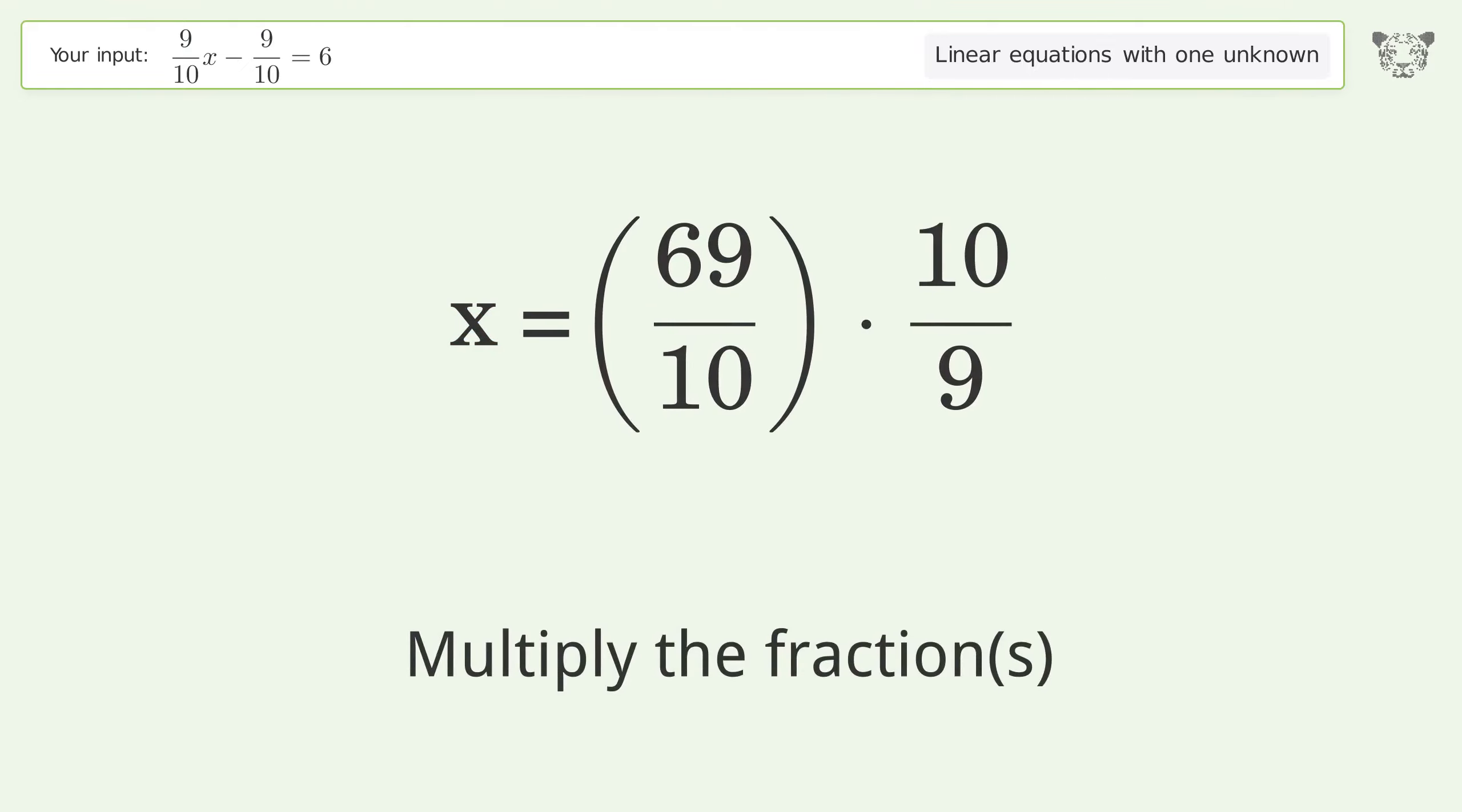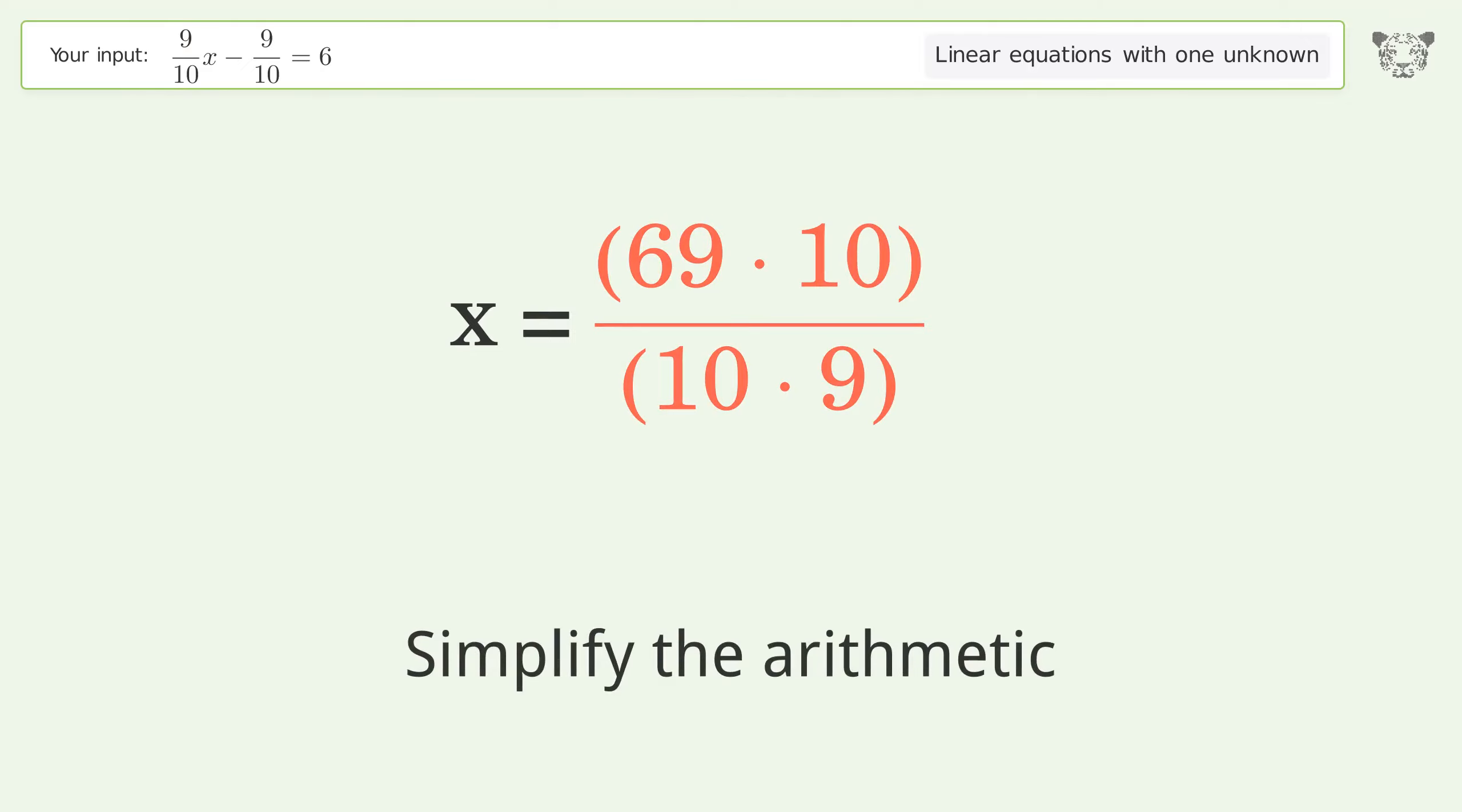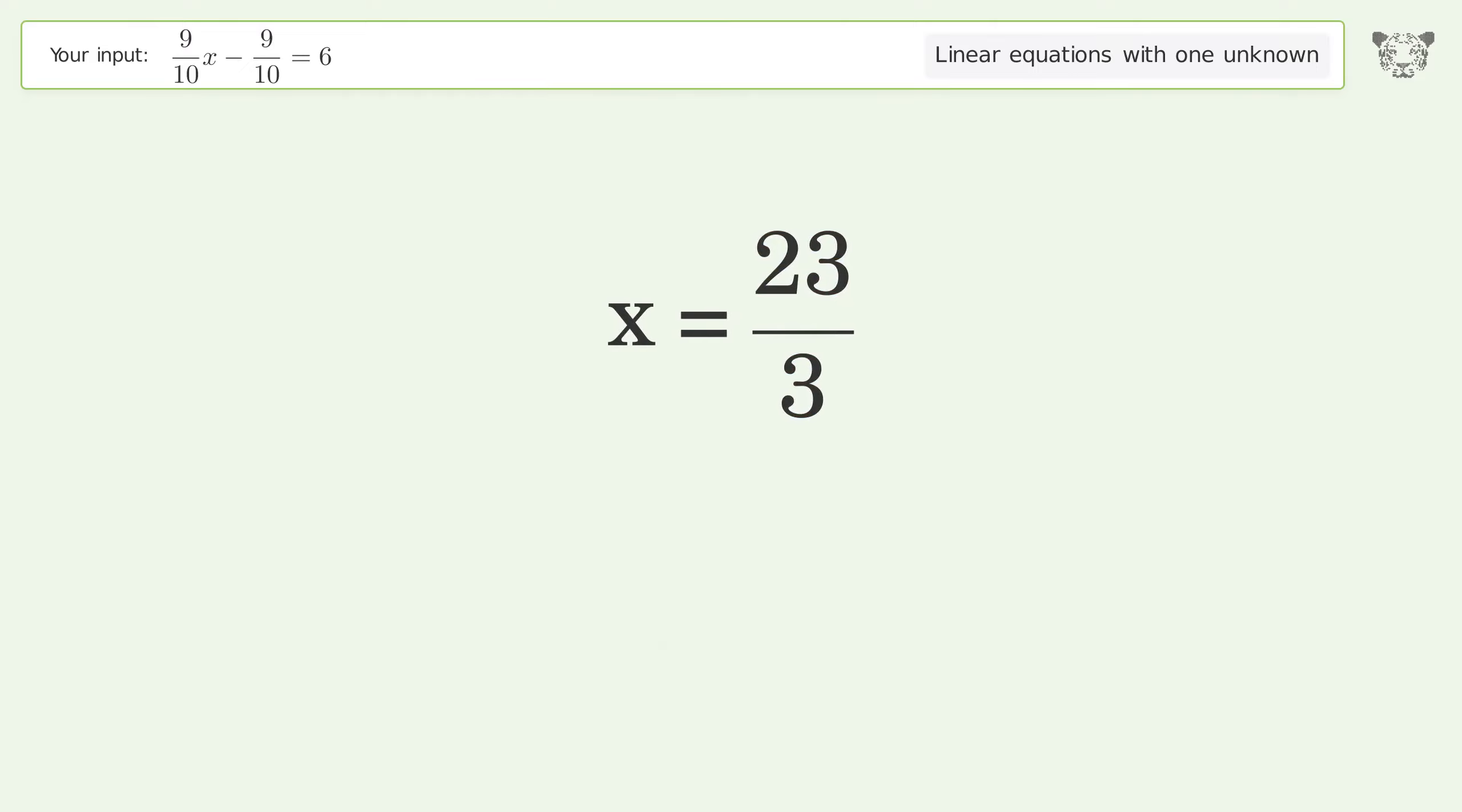Multiply the fractions. Simplify the arithmetic. And so the final result is x equals 23 over 3.